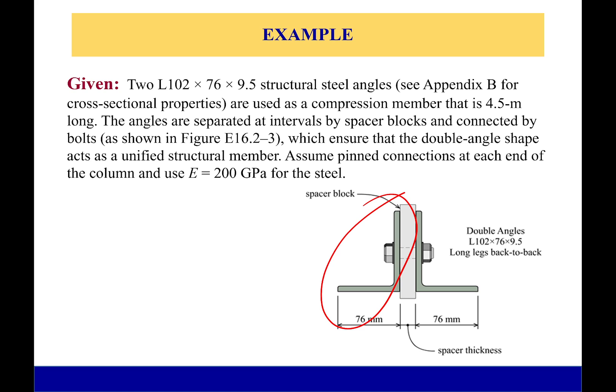The angles are separated at intervals by spacer blocks and connected by bolts. These make sure that the double-angle shape acts as one structural member, assuming pinned connections at each end of the column and use E equals 200 GPa for the steel.